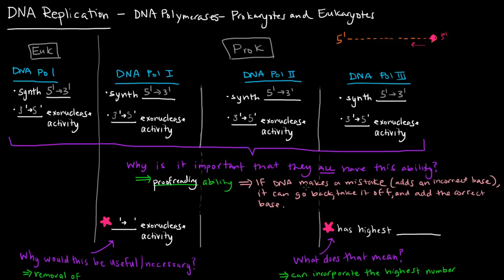Basically, if the DNA polymerase makes a mistake and adds an incorrect base - for instance, if it was supposed to add a T and it added a G - that's a problem, it has to go back and fix that.